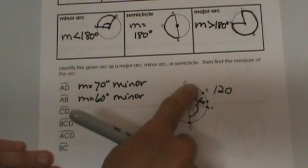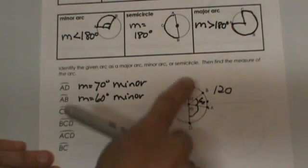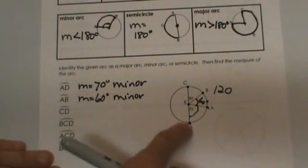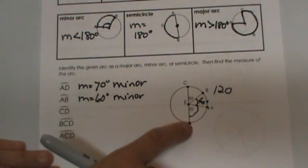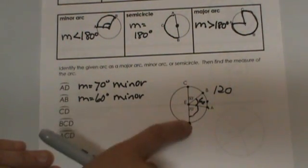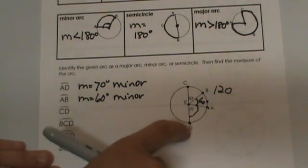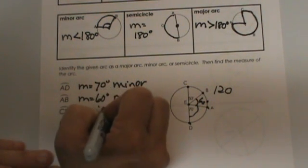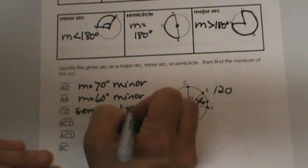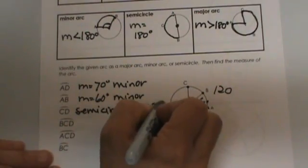C to D. Are we talking about this half or this half? Well actually it doesn't matter because we know that they are the same because CD is a diameter. The segment CD is a diameter, so that means the arc CD is a semicircle and a semicircle measures 180 degrees.